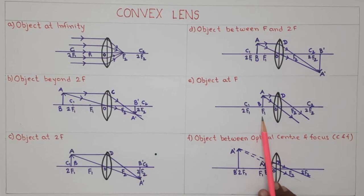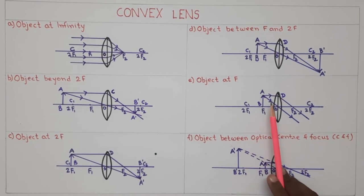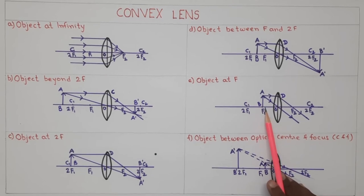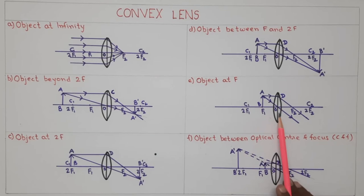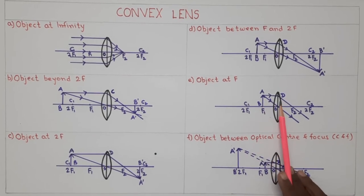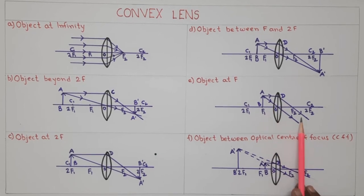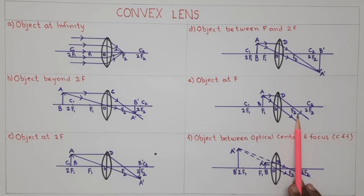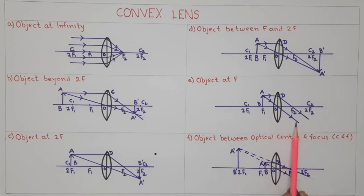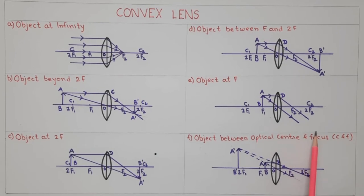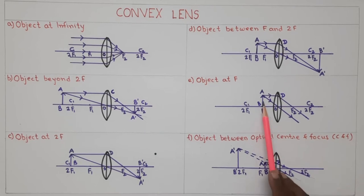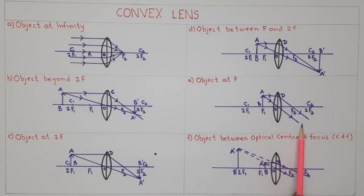Next case: object at f. Object AB is kept at a distance equal to the focal length. Ray AD is parallel to the axis; after refraction it passes through focus F on the other side. Ray AO passes through the optical center O and goes straight. After refraction, the two refracted rays are parallel to each other, so the image is formed at infinity. When the object is placed at f, the image is at infinity — real, inverted, and highly enlarged.